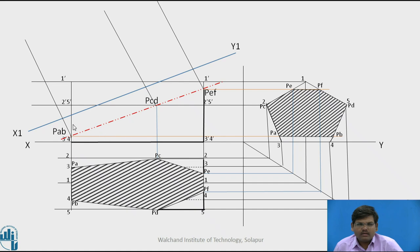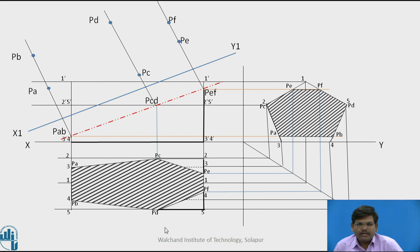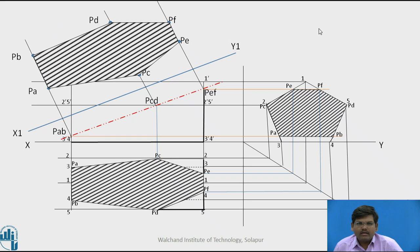The distance of PA from XY in the top view is plotted from X1Y1 on its projector. Similarly, the distance of PB from XY is plotted from X1Y1 on PB's projector. The same process is repeated: XY to PC equals X1Y1 to PC in the auxiliary view; XY to PD, XY to PE, and XY to PF are each transferred to their respective projectors from X1Y1. By joining these points we get the required true shape of the section.